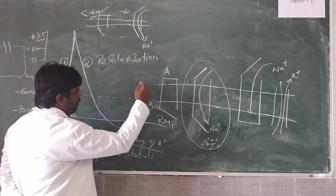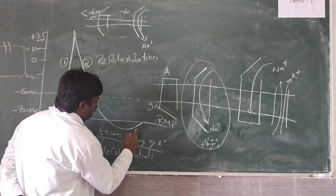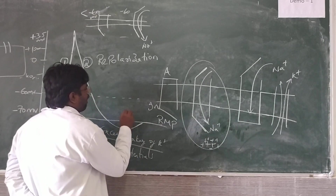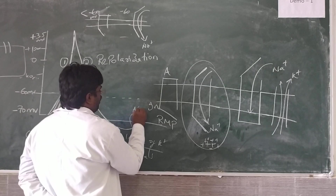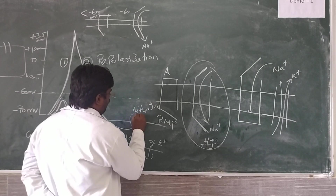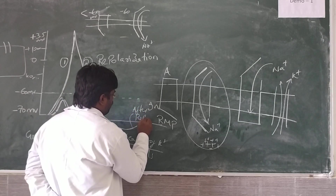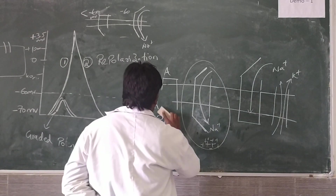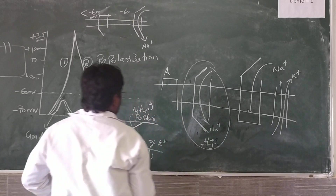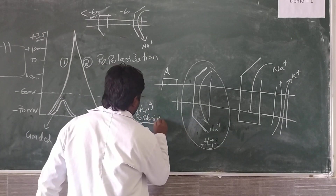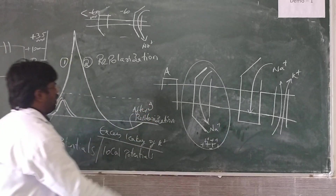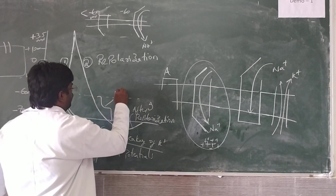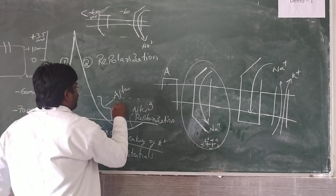Due to excess leakage of potassium ions and more negativity seen here, we call this after-repolarization — or after-depolarization. This phase we call as after-depolarization.